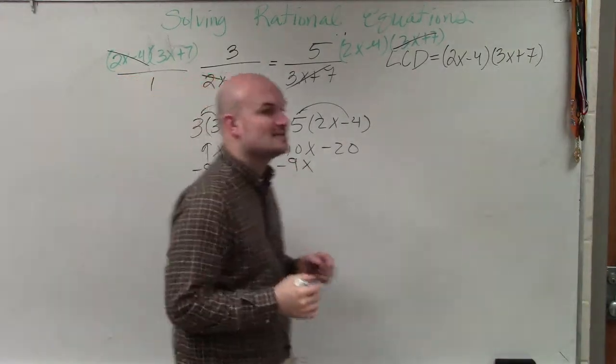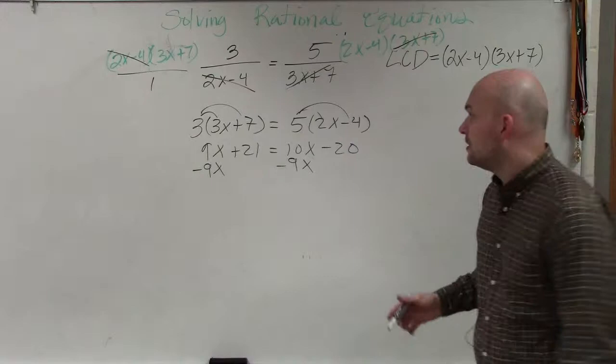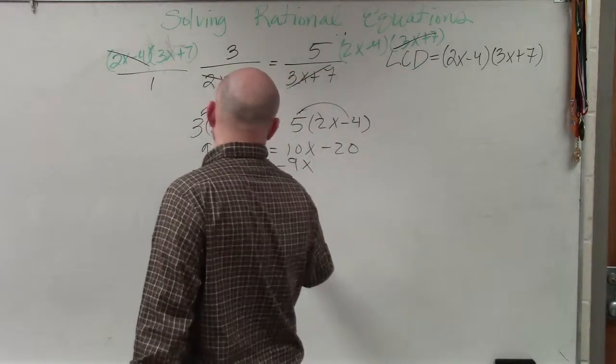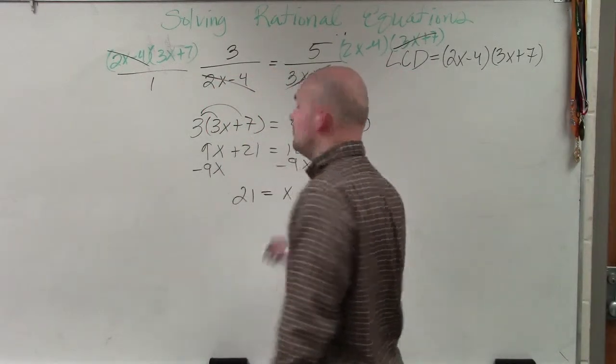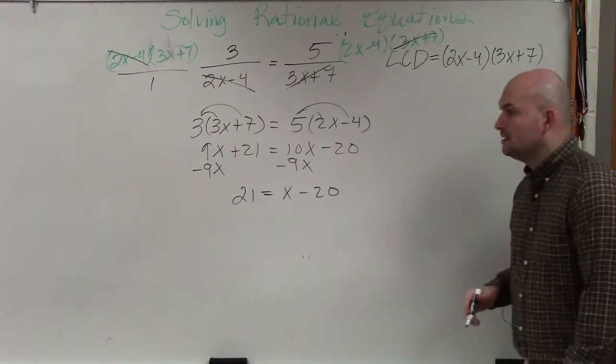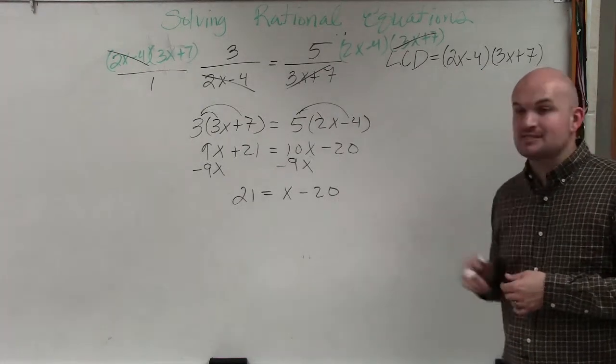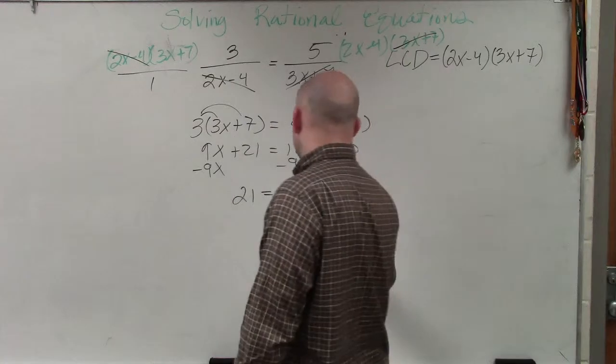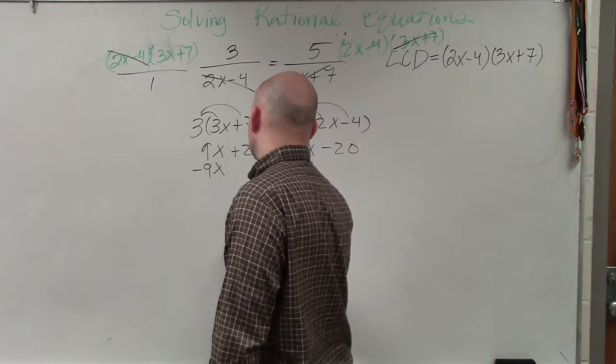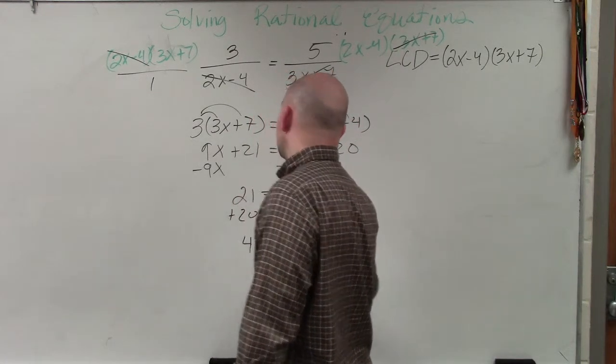So I'm going to subtract the 9x on both sides. Therefore, I now have 21 equals x minus 20. Now, I need to get the x by itself. So I see the x is being subtracted by 20. So I add 20. So I have 41 equals x.